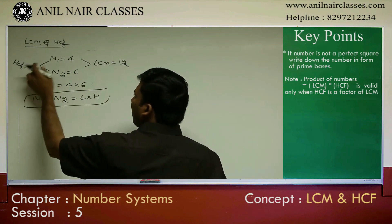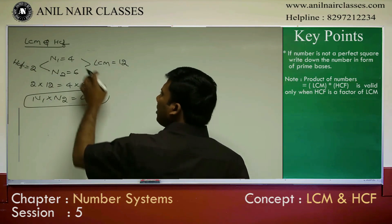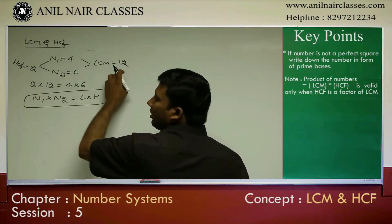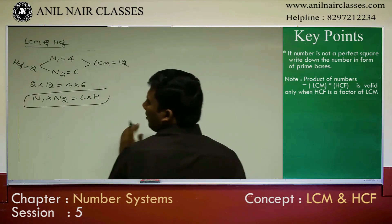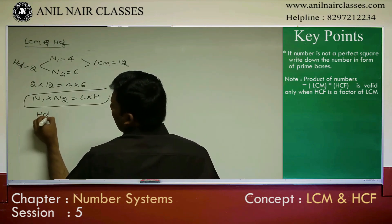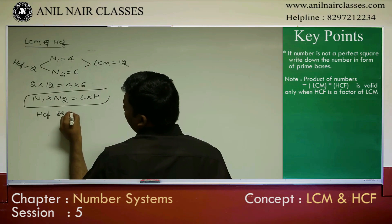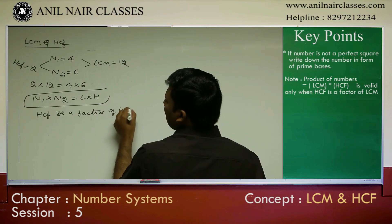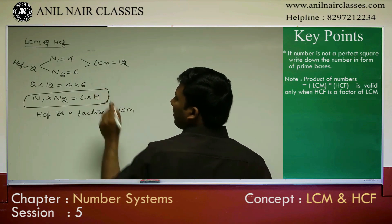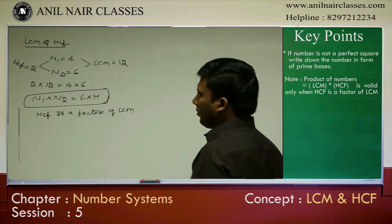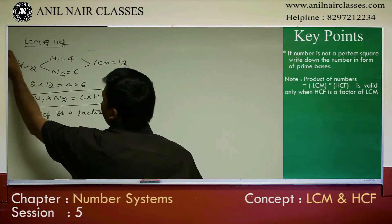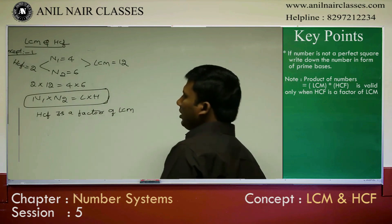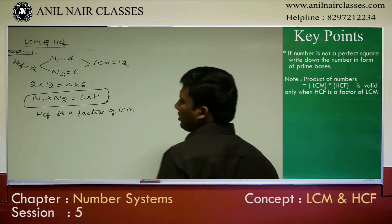But see here — is 2 a factor of 4? Yes. Is 4 a factor of 12? Yes. That means 2 should be a factor of 12, yes. So this formula N1 × N2 = LCM × HCF is valid only when HCF is a factor of LCM. Don't blindly use that formula — it is used only when HCF is a factor of LCM. This is the first concept.